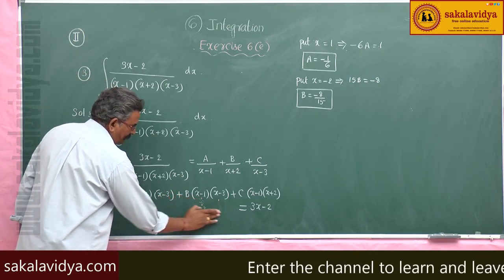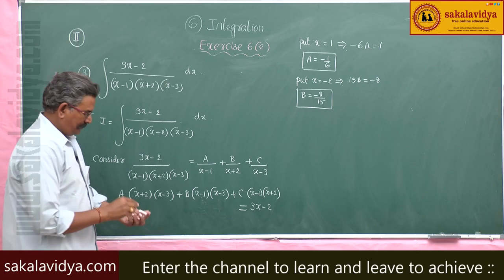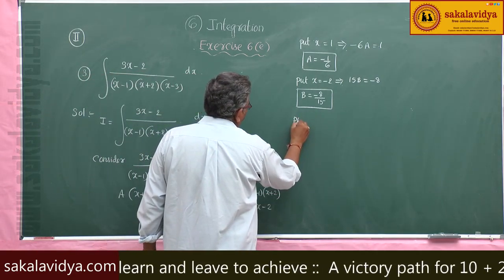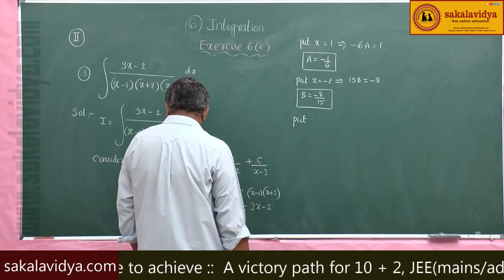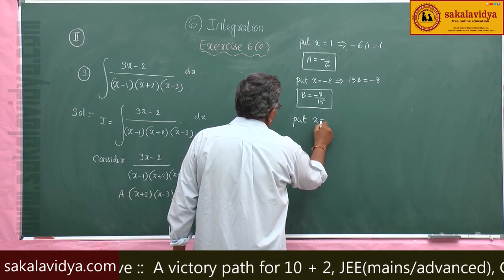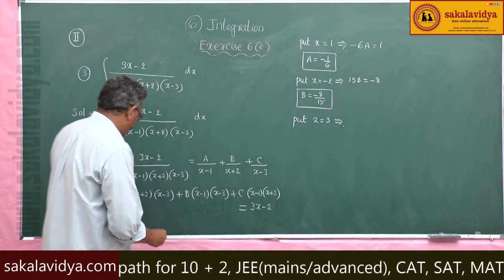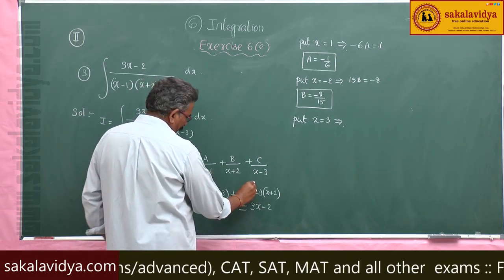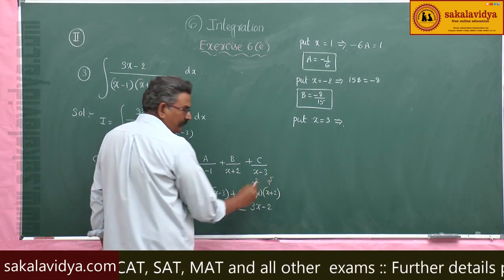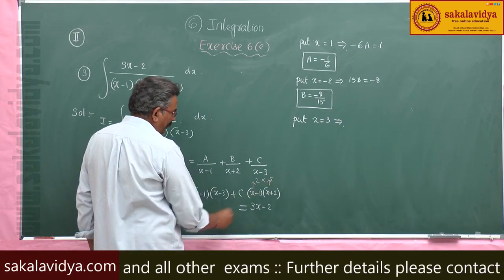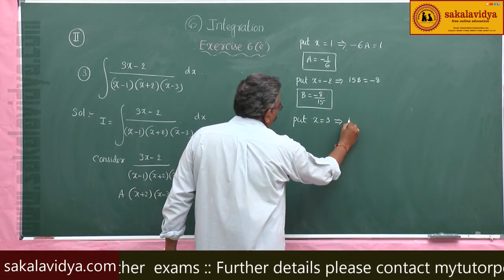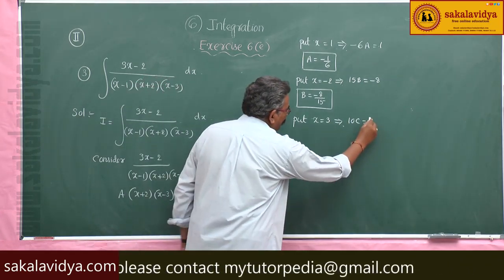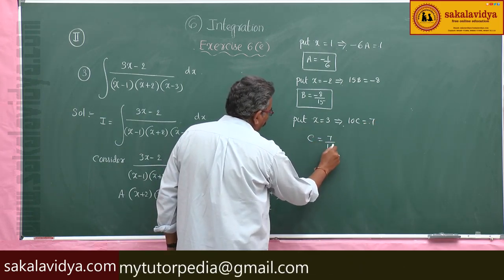Now put x equal to 3. If you put x equal to 3, the A and B terms become 0. We get (3 minus 1)(3 plus 2) times C equals 3(3) minus 2, so 2 times 5 times C equals 7, giving 10C equals 7, therefore C equals 7/10.